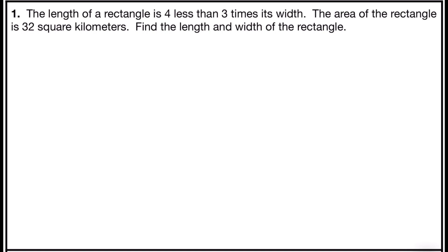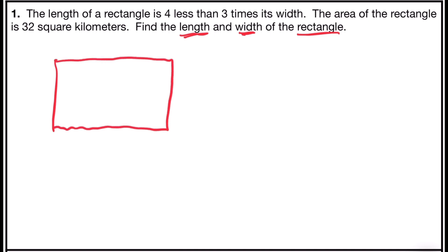Problem number one says the length of a rectangle is four less than three times its width. The area of the rectangle is 32 square kilometers. Find the length and the width of the rectangle. The problem asks you to find the length and the width, and we're going to draw a figure to help us visualize what's happening. We have a rectangle and we know the area is 32 square kilometers.